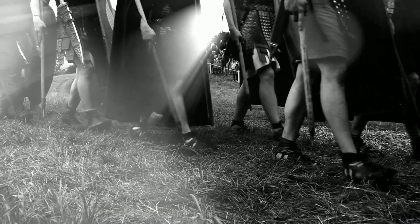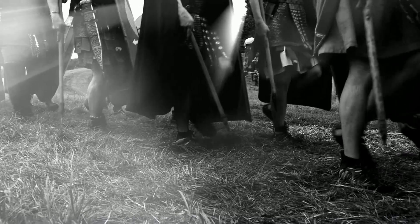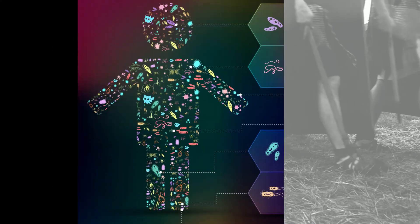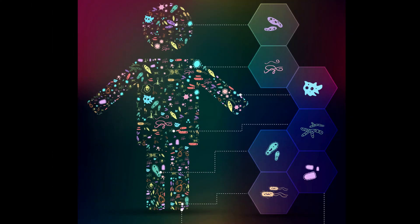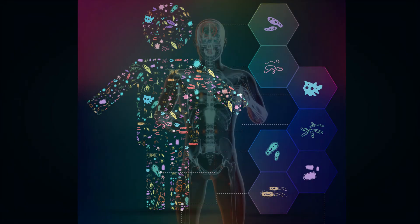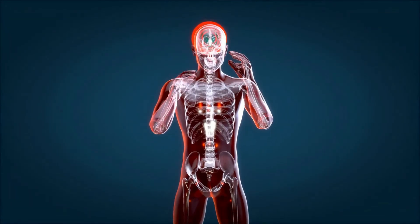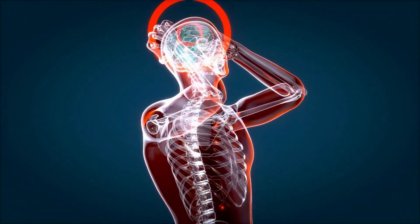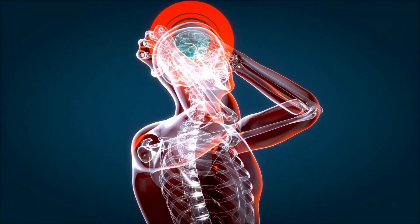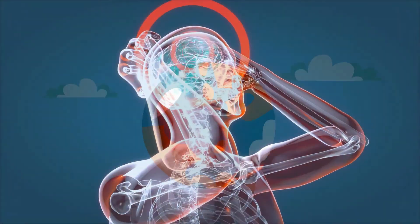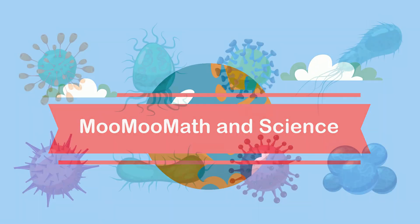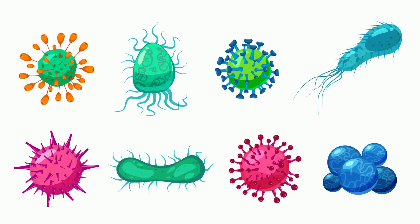Every day we are in a battle — a battle against tiny organisms that would like to live in or on us and may cause disease. The good news is we have an amazing immune system that can destroy most of these foreign invaders. Welcome to Moo Moo Math and Science and the four types of pathogens, which we like to call germs.